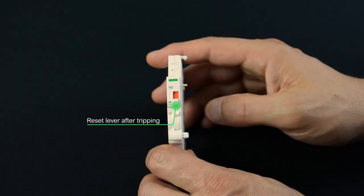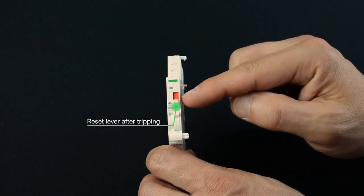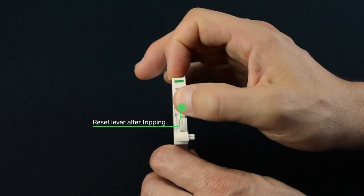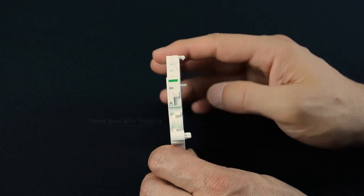Once an Acti9 ISD has tripped, it can be manually reset with a reset lever. Simply lift it like that and it is ready to work again.